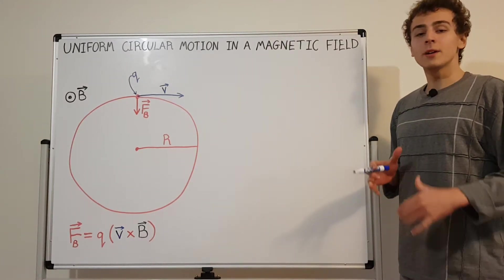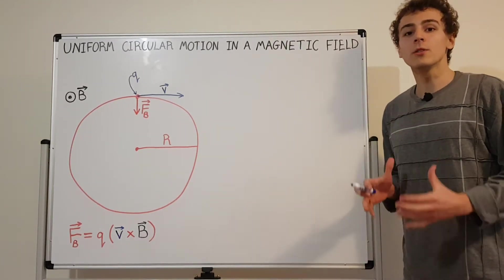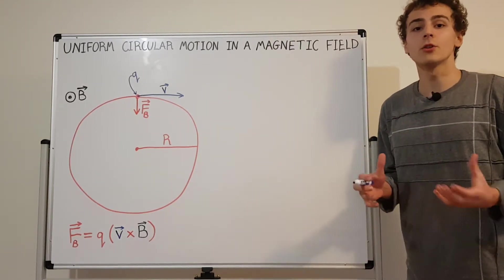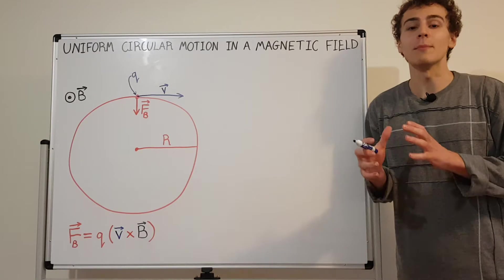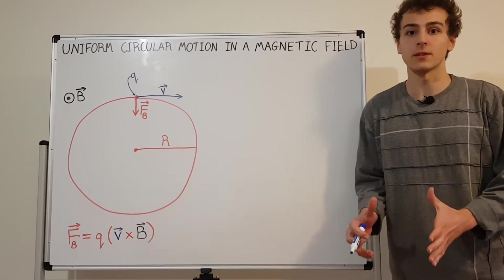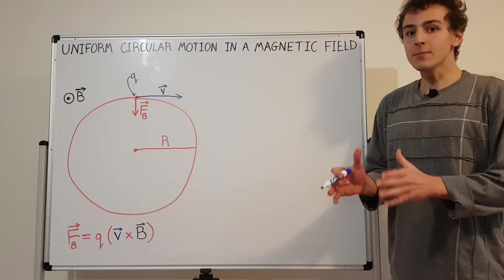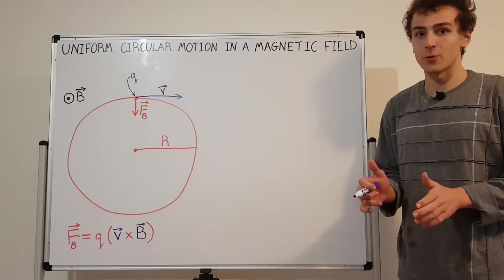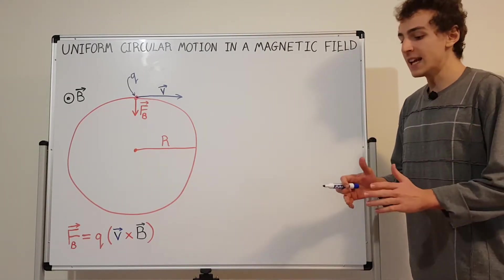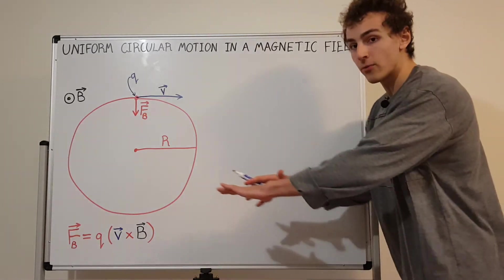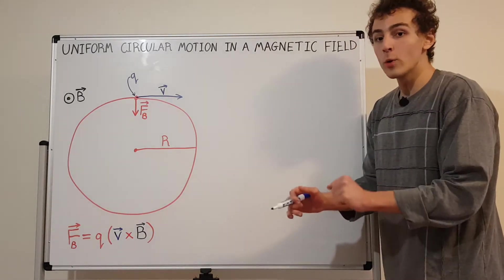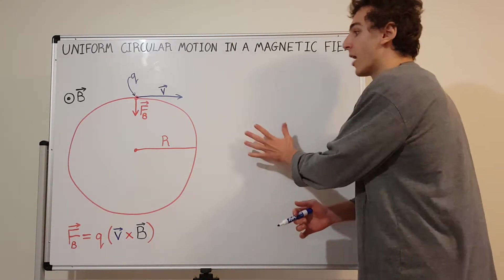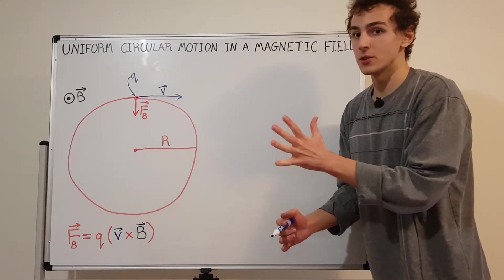In this video I'm going to talk about uniform circular motion in a magnetic field. This magnetic field is actually going to be very special because it is uniform and it always points out of the whiteboard.